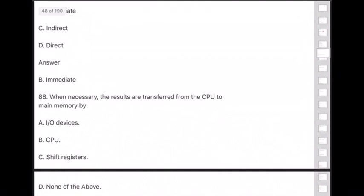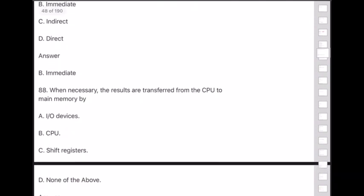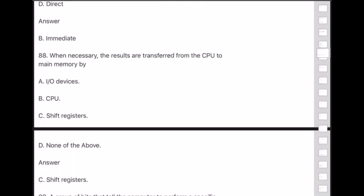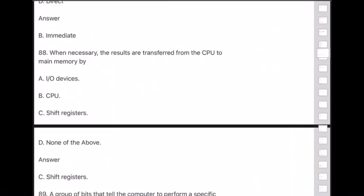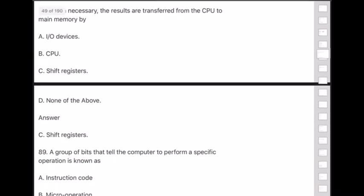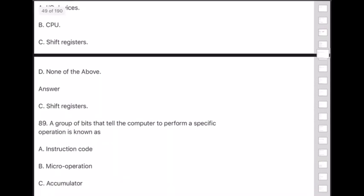Question 88: When necessary, results are transferred from the CPU to main memory by — answer is option C — shift registers.